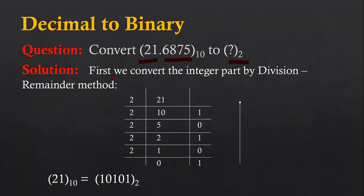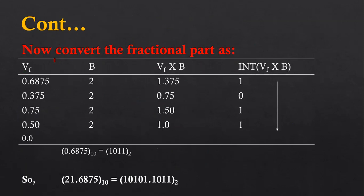In the solution, we first convert the integer part using the division-remainder method. The integer part is 21. I have divided 21 by two: it is divisible 10 times with remainder one, and so on. The resultant values are read from bottom to up. So the conversion of 21 is 10101. This is the first half of the conversion.